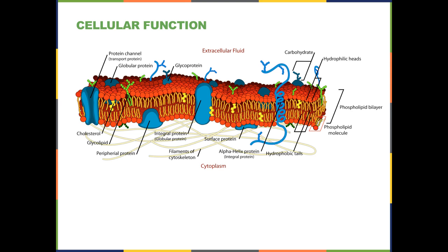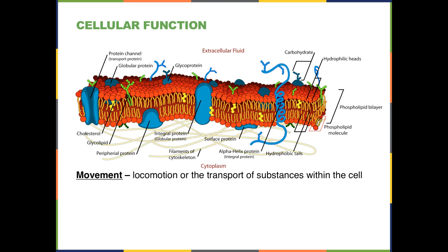Another group of functions involves movement. I show a diagram of the cell membrane because it is important here. Cells have various methods by which they move. Prokaryotic cells usually have little hair-like projections known as cilia, which project from the cell membrane, or a larger whip-like structure called a flagellum. Both of these are responsible for the movement of the cell.